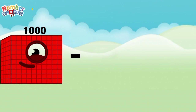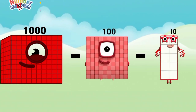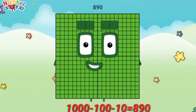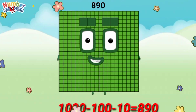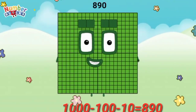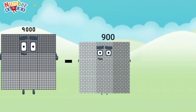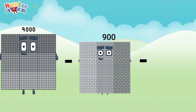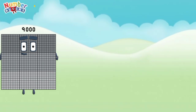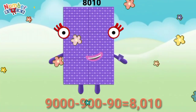1,000 minus 100 minus 10 equals 890. 9,000 minus 900 minus 90 equals 8,000.